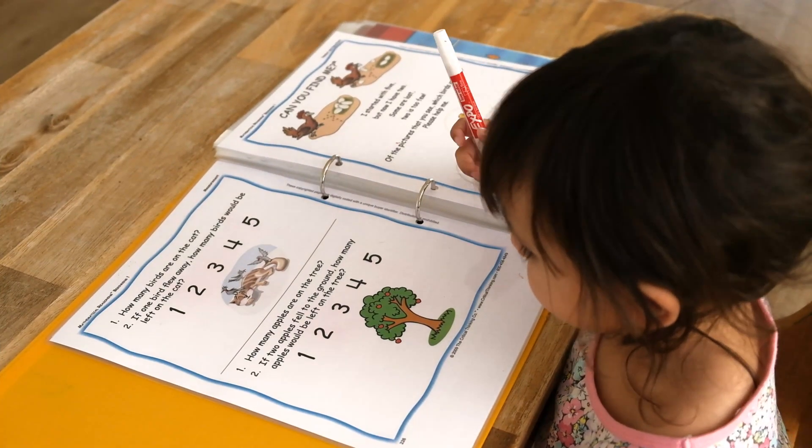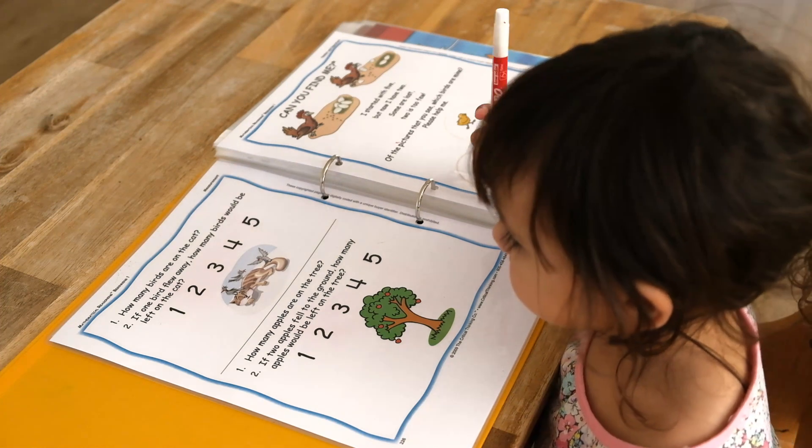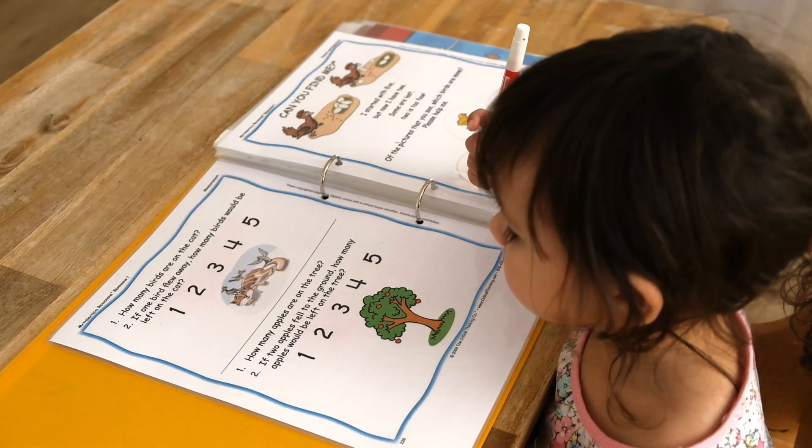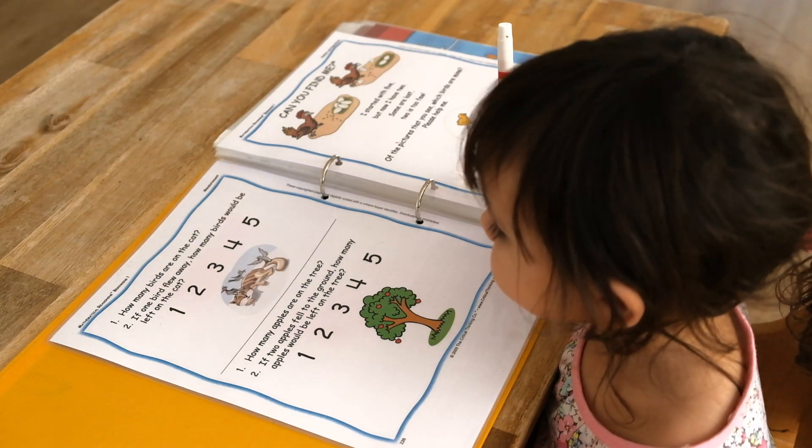How many birds are on the cat? That's right. If one bird flew away, how many birds would be left on the cat? That's right. Can you circle that number?